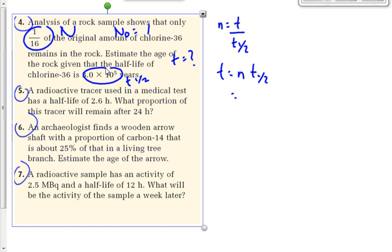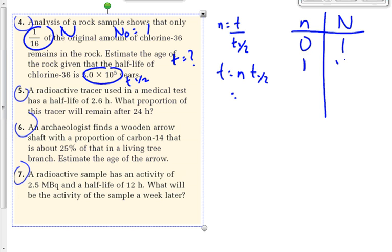The divide-by-two method means we start a little table — little n, big N. After zero half-lives, we've got 1 remaining. After one half-life, 1/2. After two half-lives, 1/4. After three half-lives, 1/8. After four half-lives, 1/16. We could do this as a decimal number — the question is given in fraction form, but converting to decimal would be fine as well.